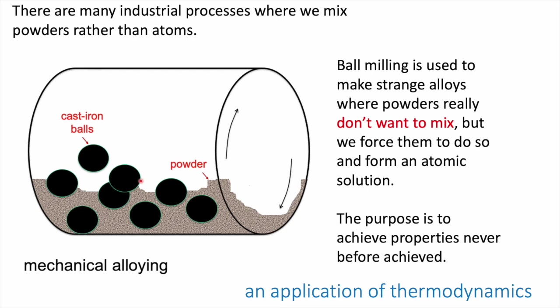This is a process in which we force atoms to dissolve into each other by mechanical force, caused by the impact of iron balls on the raw powder fed into the ball mill. With this we can create strange alloys where powders really don't want to mix — if we tried to melt them they would phase-separate — but we force them to form a solution on an atomic scale. We want properties that cannot otherwise be achieved. This process is known as mechanical alloying.